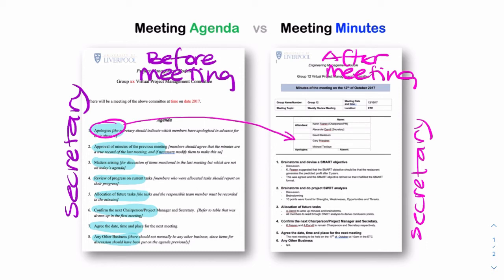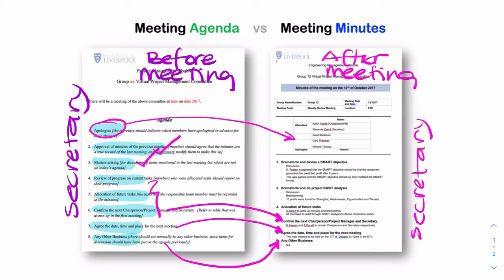The secretary will go through the apologies and list them. The secretary will approve minutes of the last meeting, go through matters arising from the last meeting, and go through the tasks. Each of these has a corresponding item in the agenda. All the details — all the notes of what actually happened in the meeting — that's what you put in the minutes.